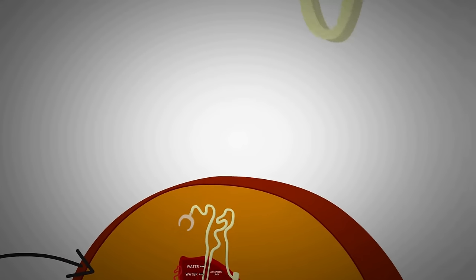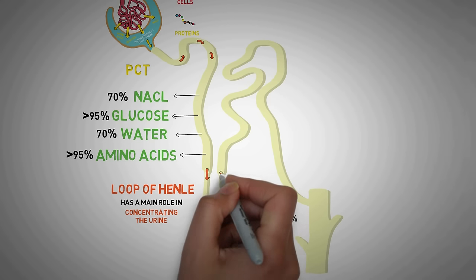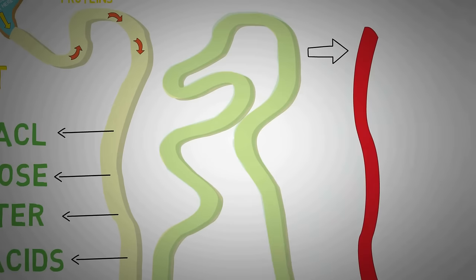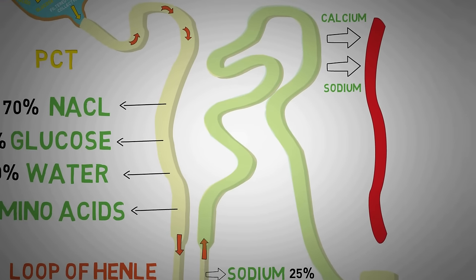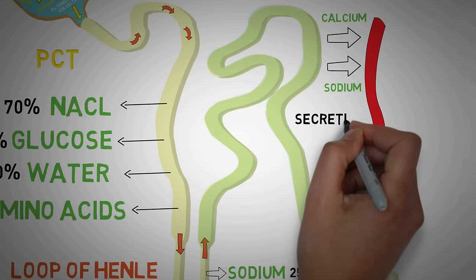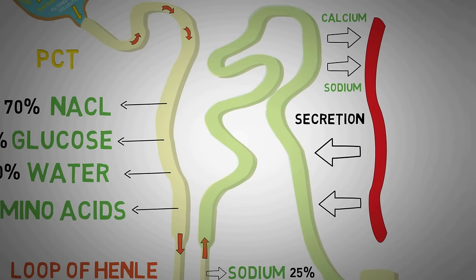This is the major mechanism for recovering water filtered at the renal corpuscle. After the loop of Henle, the filtrate passes into the distal convoluted tubule where more reabsorption of ions like calcium and sodium occurs. In the distal convoluted tubule, the final mechanism of urine formation also takes place: secretion. Secretion can be viewed as the opposite of reabsorption.